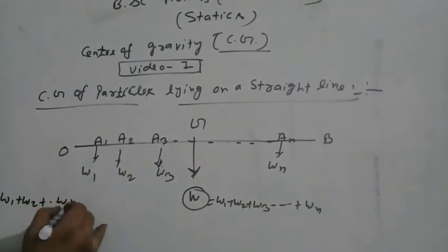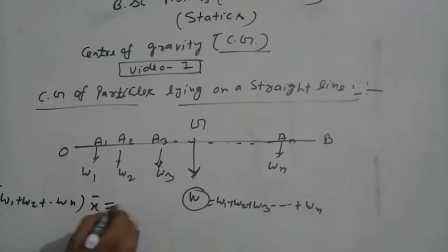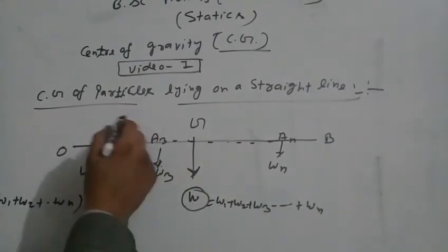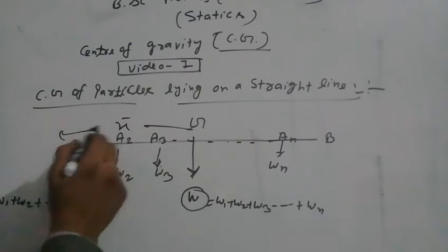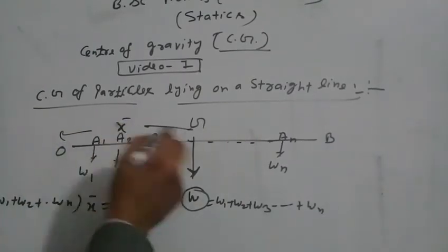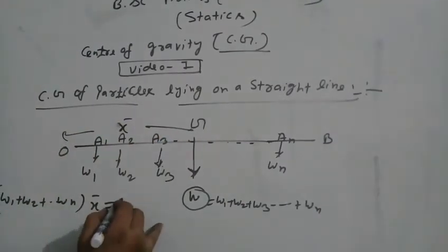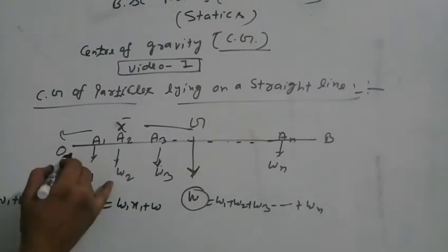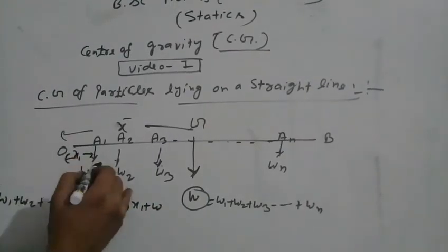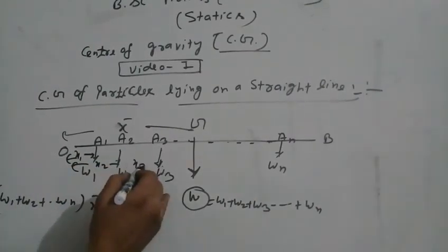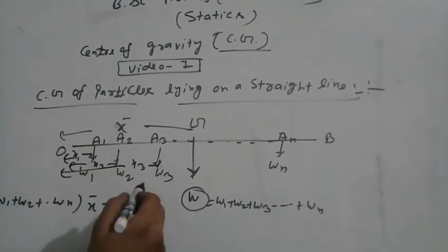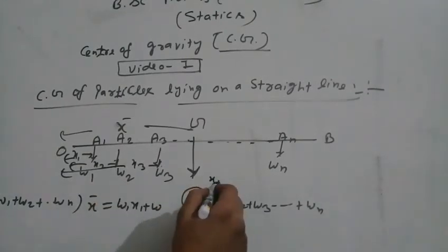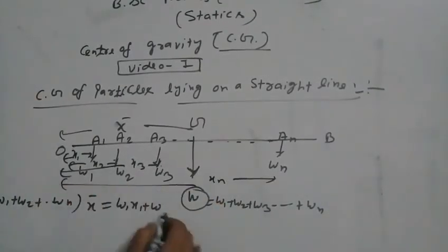W into x bar, where x bar is the distance of the center of gravity from point O, equals the algebraic sum of the moments of forces. The distances are x1, x2, x3, dot dot dot, xn from point O. So W into x bar equals